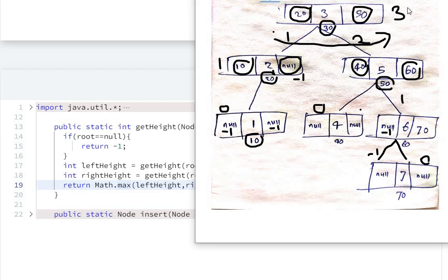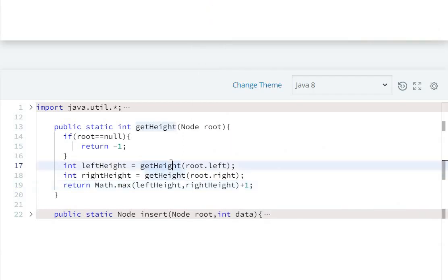Maximum is 2, so 2 plus 1 equals 3. The final height is 3, so our answer will be 3. In this way, the recursive function will call, go to the left of the tree, go to right of the tree, then we will compare which is maximum, then we will add plus one.